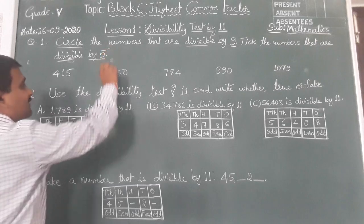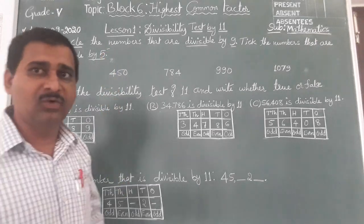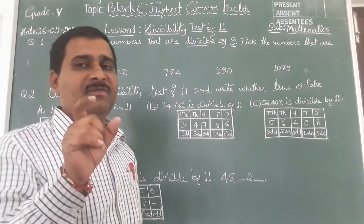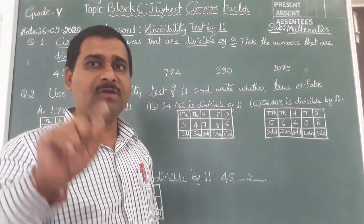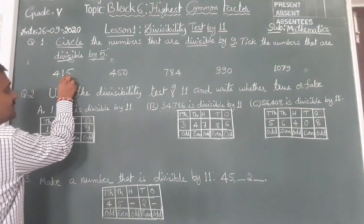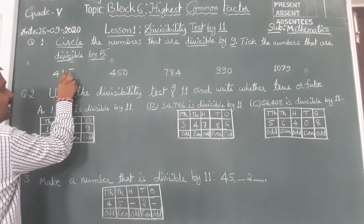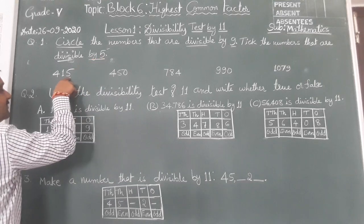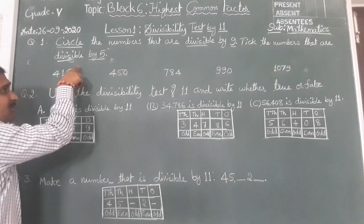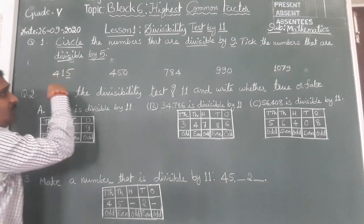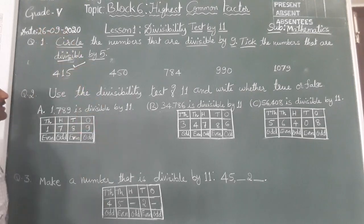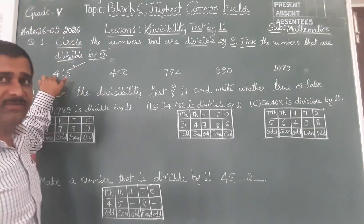Is this divisible by 5? The rule: what is the rule of divisibility by 5? In the 1's place, if you find 0 or 5, then that number is divisible by 5. Here, 5 is in the 1's place, so the whole number is divisible by 5. We should tick mark it.